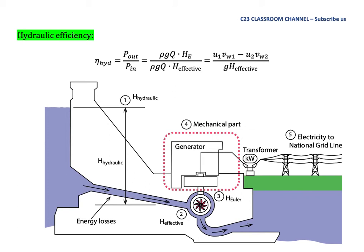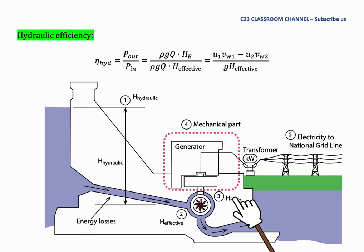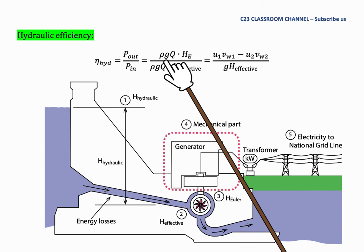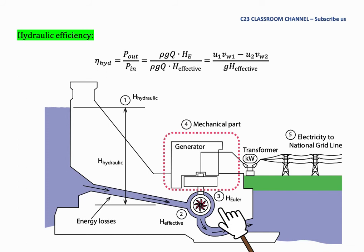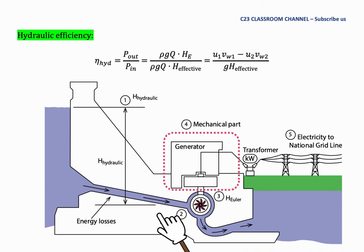Hydraulic efficiency can be defined as power out divided by power in. The power input for this Francis turbine is H_effective, and the power output is the Euler head. So hydraulic efficiency can be written as ρgq × H_Euler over ρgq × H_effective. If energy losses can be neglected, we can take hydraulic head as the power input of the turbine.